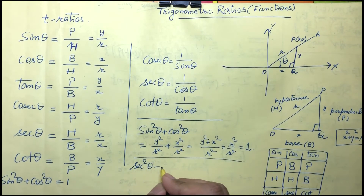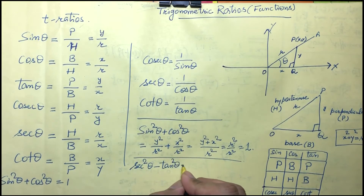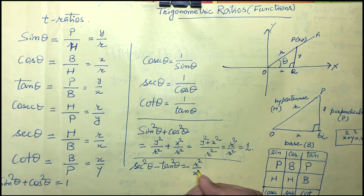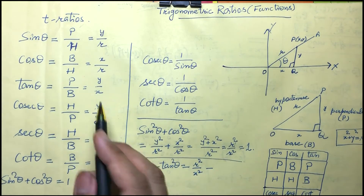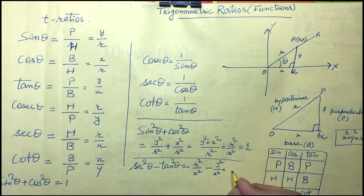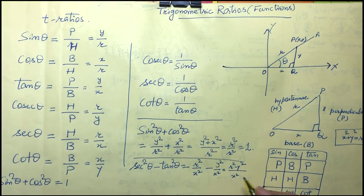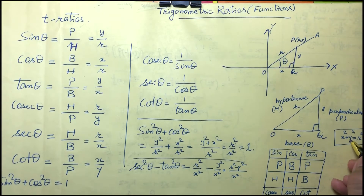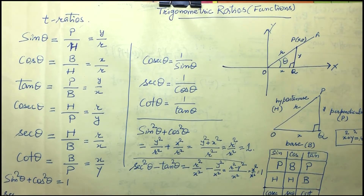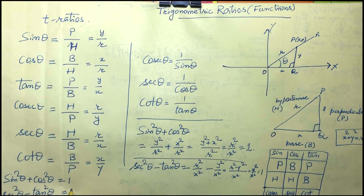The second identity is secant squared theta minus tan squared theta. Secant theta is r upon x, so secant squared is r squared upon x squared. Tan theta is y upon x, so tan squared is y squared upon x squared. Taking LCM gives r squared minus y squared upon x squared. Using Pythagoras, r squared minus y squared equals x squared, so this simplifies to 1.